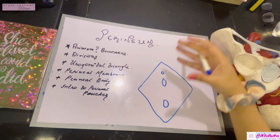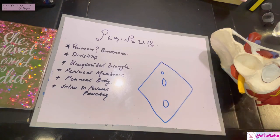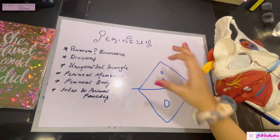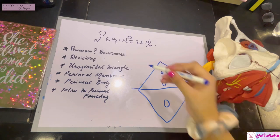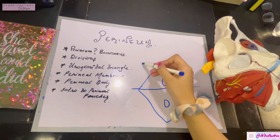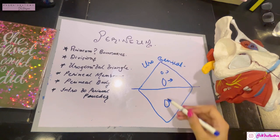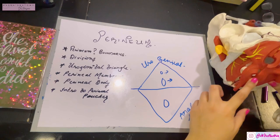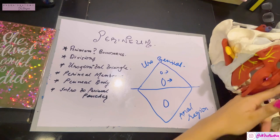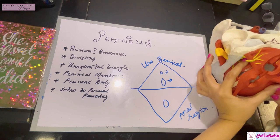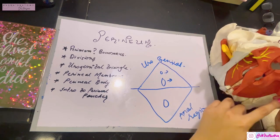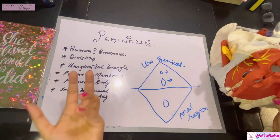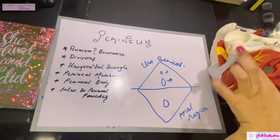If you divide the diamond shape into two halves with a transverse line between the ischial tuberosities, two triangles form. The anterior part, where the urethra and genital organ openings are, is the urogenital triangle. The posterior part is the anal region. In the median plane of the anal region is the termination of the anal canal, flanked by two spaces called the ischiorectal fossae. On the lateral wall of these fossae lies the pudendal canal, which carries the pudendal nerves and internal pudendal vessels — the chief neurovascular supply for the entire perineal area.